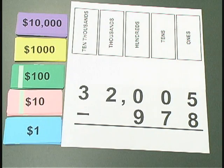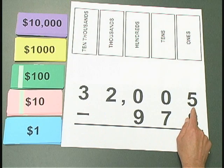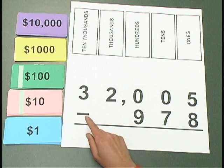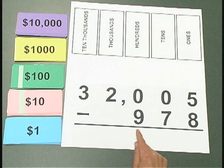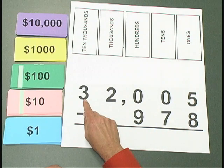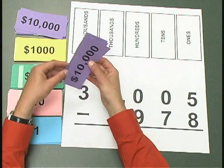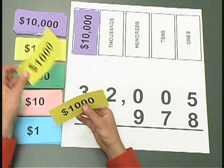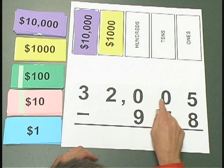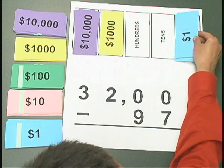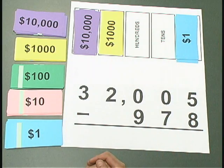Let's look at another subtraction problem where we think about it in terms of money. Here we have 32,005 minus 978. If we think of this in terms of money, we would start out with $32,005 and take away $978. So 32,005: I have 3 ten-thousands, 2 thousands, 0 hundreds, 0 tens, but 5 ones — so I'll count out 5 ones. Here at the top I have $32,005.